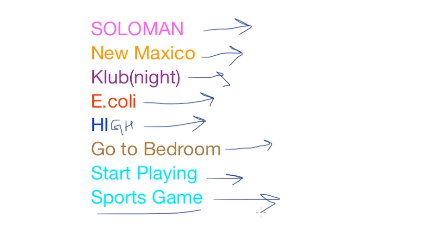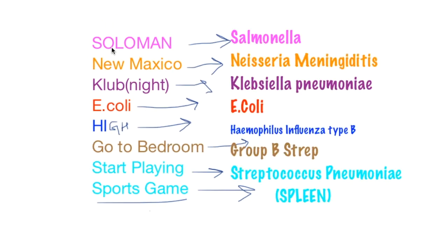Okay, so now we will talk about which bacteria are related to this story. Solomon which is Salmonella, he goes to New Mexico which is Neisseria meningitidis, nightclub which is Klebsiella pneumoniae.